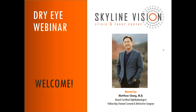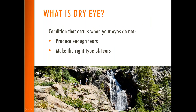Hello, everyone. I'm Dr. Chang. I'm going to do a dry eye webinar today, and hopefully you can find some good information if you're suffering from dry eyes. So what is dry eye? Dry eye is a condition when you are not producing enough tears — it's basically a tear deficiency. In addition to having a deficient tear, you may not have the right type of tear. The tear is a very complex issue where there are many different layers, and if something is not quite right with the structure of the tear film, you may be suffering from dry eye.